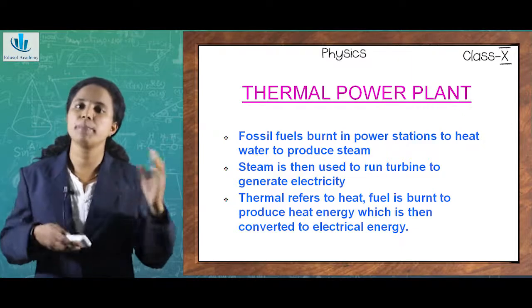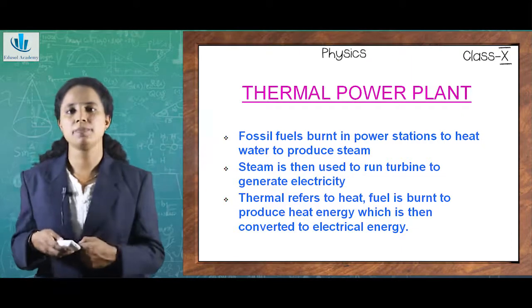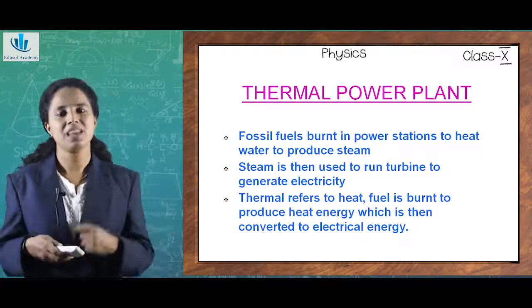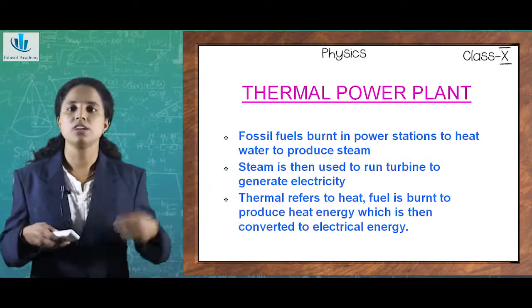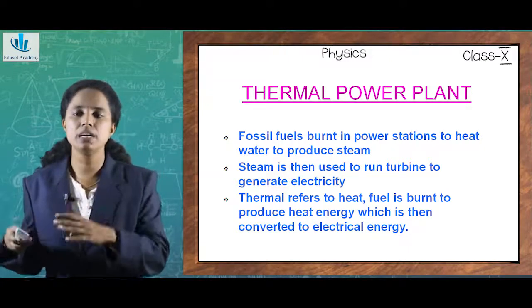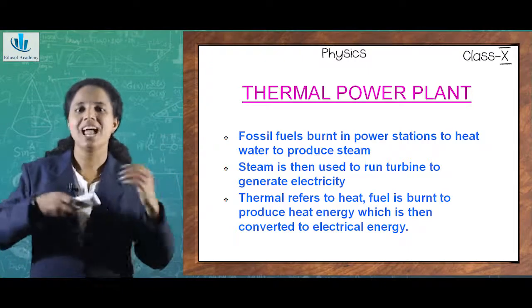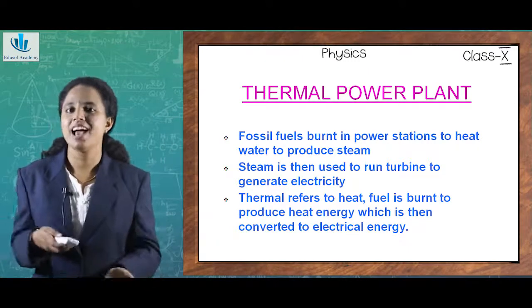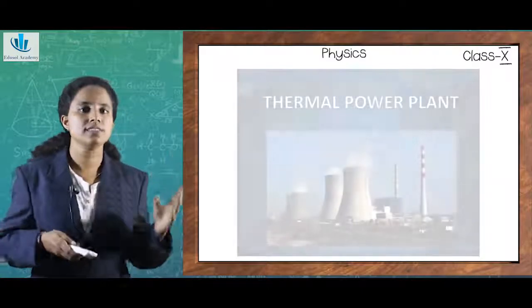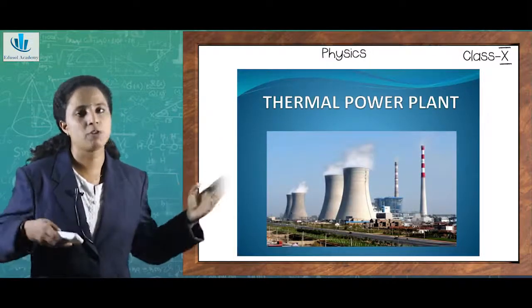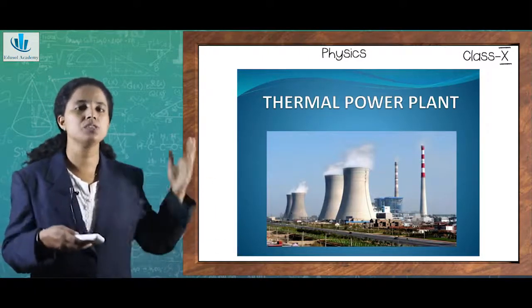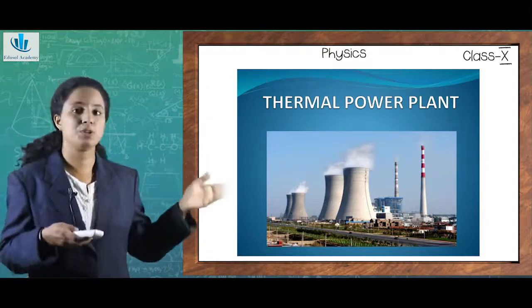The steam is used to run the turbines to generate electricity. The word 'thermal' refers to heat — the fuel is burned to produce heat energy which is then converted into electrical energy. As Einstein said, there is transfer of energy from heat to electrical energy. In thermal power plants, fossil fuels are used; once heated they produce steam, which runs the turbines of generators to produce electricity.